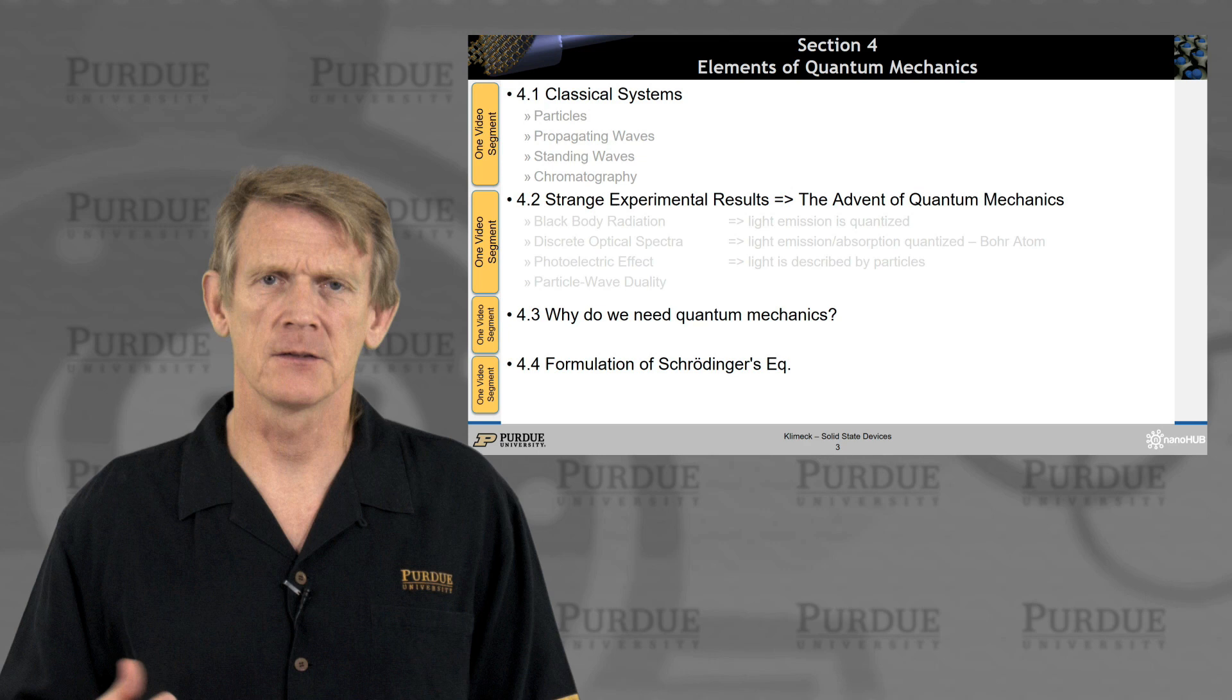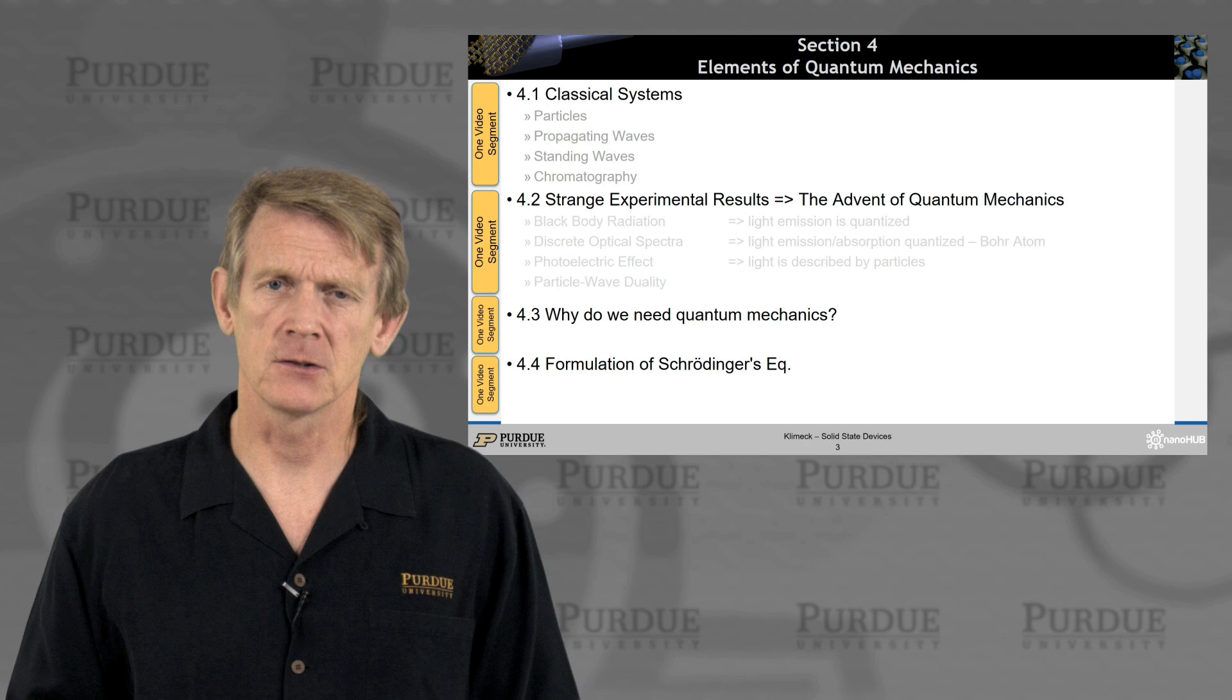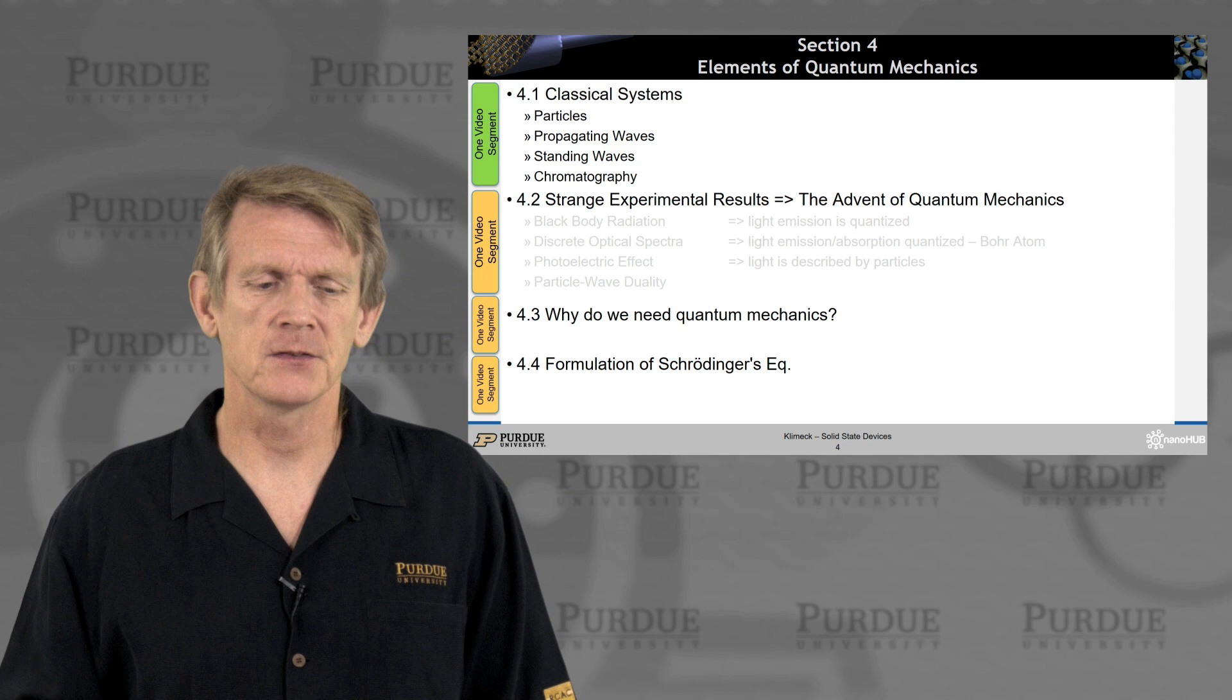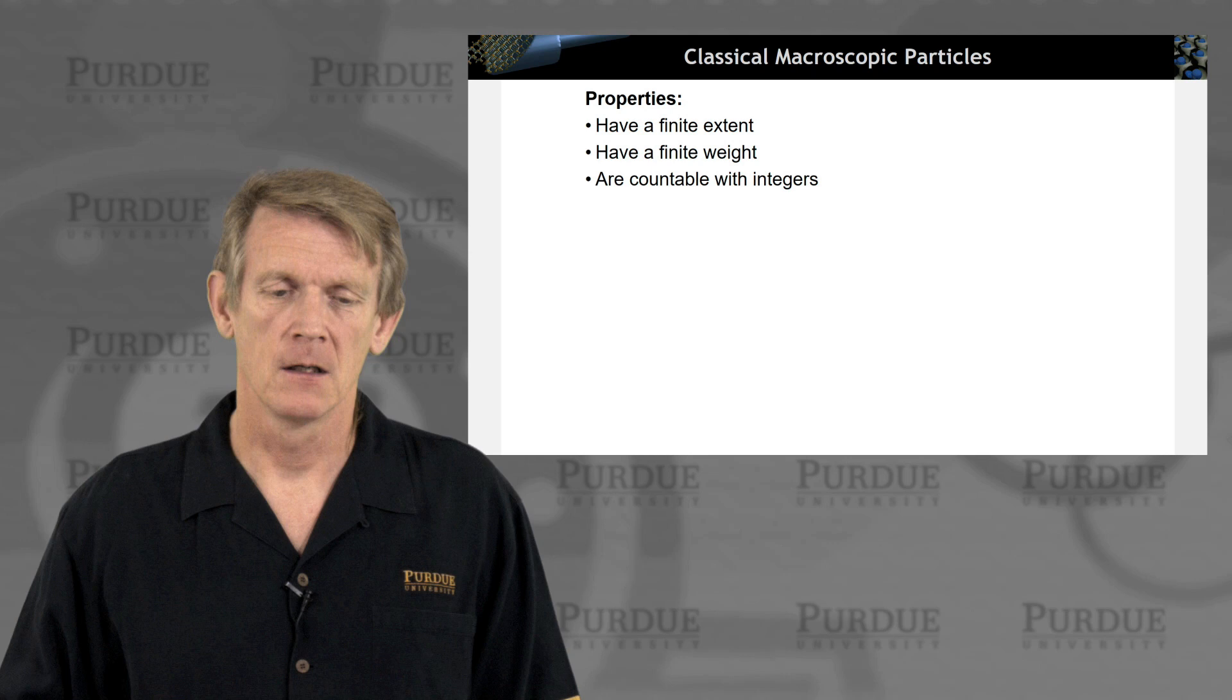So that being said, we're going to look at some classical systems first to just set a reminder. We'll look at some strange experimental results that really created the advent of quantum mechanics. And I'll touch base again, why would we care? And then there's a very brief and short formulation of Schrodinger equation. All right, so let's look at particles, propagating waves, standing waves, and chromatography as the stepping stone to equalize the playing field a little bit, and start with classical macroscopic particles.